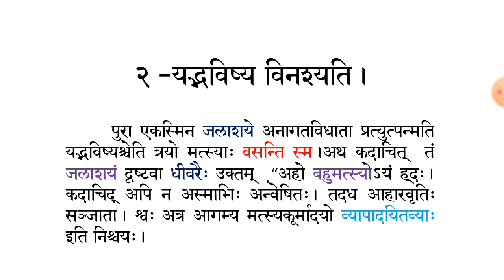Second line: Atham means 'now.' Kadachit means 'once.' Tam jalashayam drashvta means 'having seen that pond.' Divraihi means 'fishermen.' Uktam means 'said.' So the translation is: 'Now, once, having seen that pond, fishermen said — Oh! This pond is full of a variety of fish.' Kadachit api na asma bhihi anvesitah: Anvesitah means 'seen,' asma bhihi means 'we,' so 'we have not seen it earlier.'